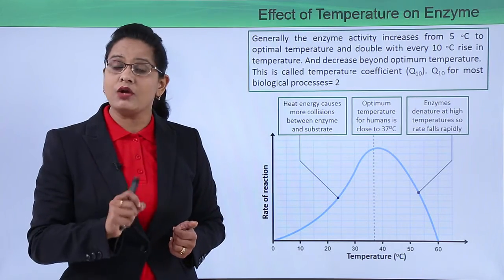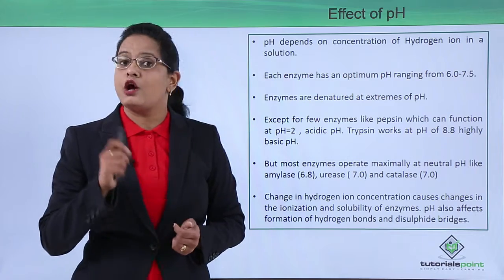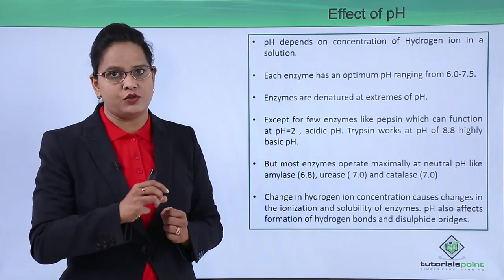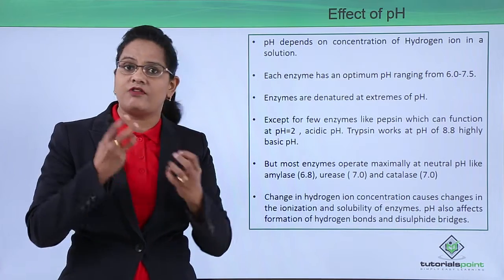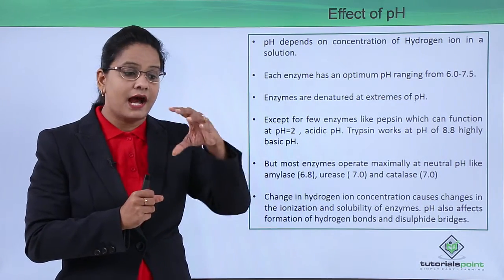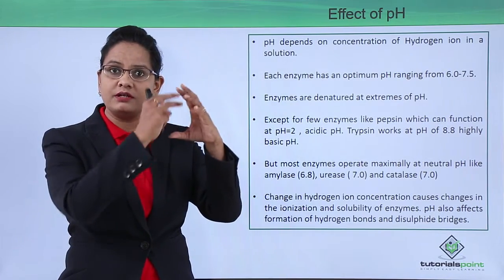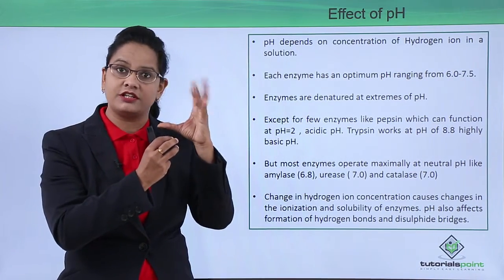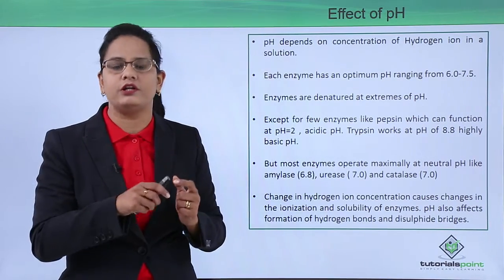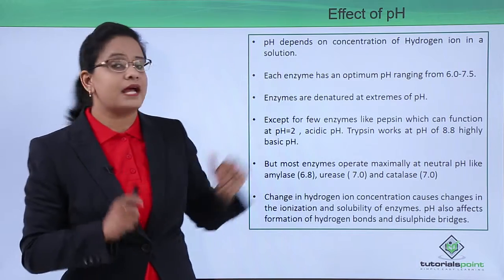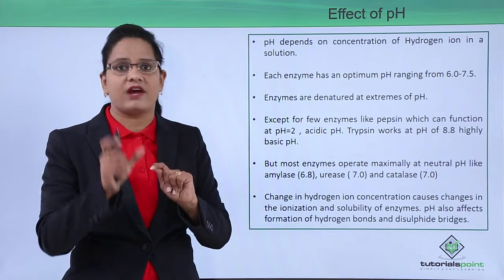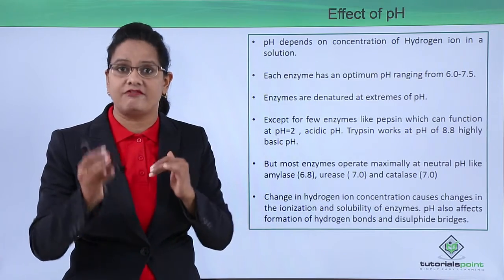Now let us see how pH affects the activity of an enzyme. pH — the potential of hydrogen — is the concentration of hydrogen ions in a solution. Proteins are made up of hydrogen bonds and disulfide bonds in their tertiary structure. As the pH increases, the hydrogen ion concentration changes, affecting the active site by altering its shape, so the substrate can no longer bind. Each enzyme has an optimum pH range, which is typically 6 to 7.5.